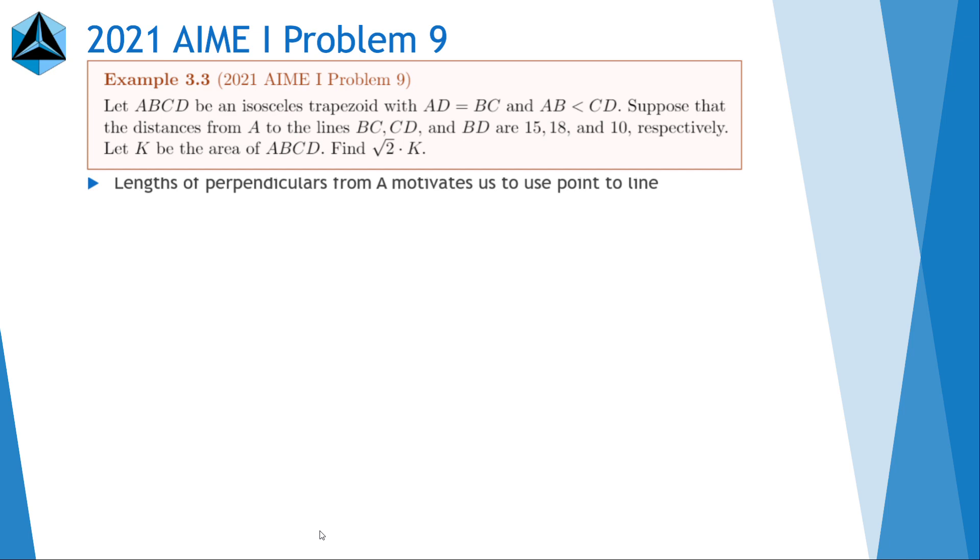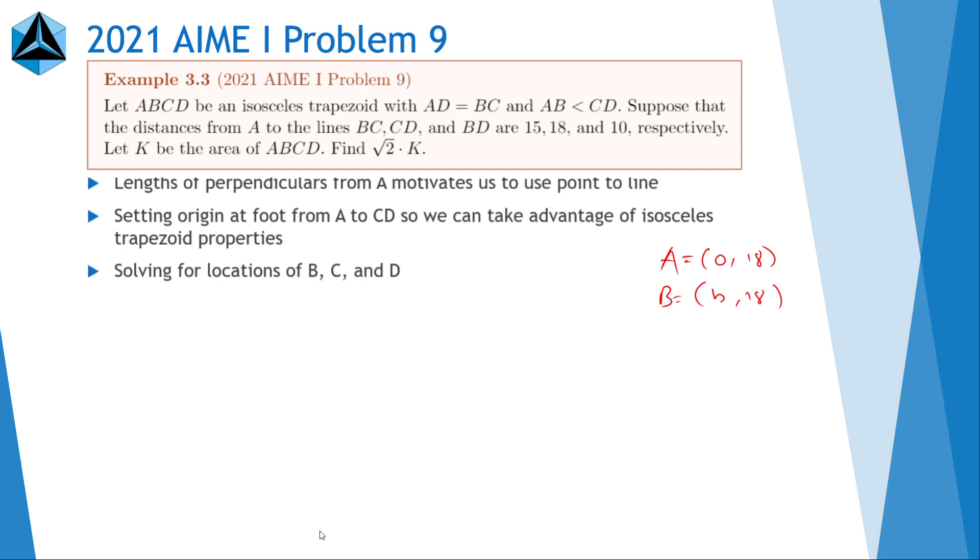So for the origin, the best choice of origin, at least in my opinion, is to set it as the foot of the altitude from A to CD. So we can take advantage of isosceles trapezoid properties. So the coordinates of ABCD will be relatively nice. So now, we set A equals 0 comma 18, B as B comma 18, C as B plus D comma 18, and D as negative D comma 0.